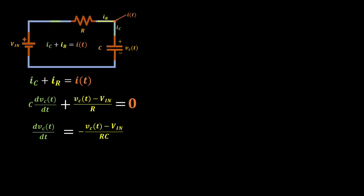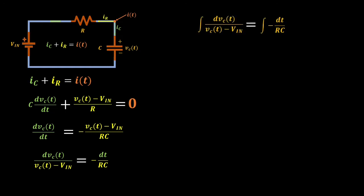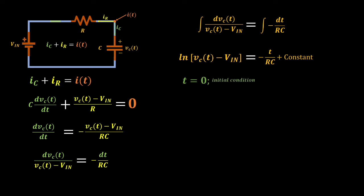Transposing the resistor current on the right side and multiplying both sides by 1 over C, we will have this equation. By cross multiplication, we can derive a variable separable differential equation. We can integrate both sides, and on the left side of the equation, we have the form integral of du over u, which is ln of u, with u equivalent to the output voltage minus the input voltage. On the right side, I can take out the negative 1 over RC as a constant, and I will be left with the integral of dt, which is T, plus a constant. Now, we have to find the value of the constant. At time equals to zero, we assume that our initial condition, which is the output across the capacitor, is equivalent to V sub O. So our constant is equivalent to ln of the initial output voltage V sub O minus the input voltage.